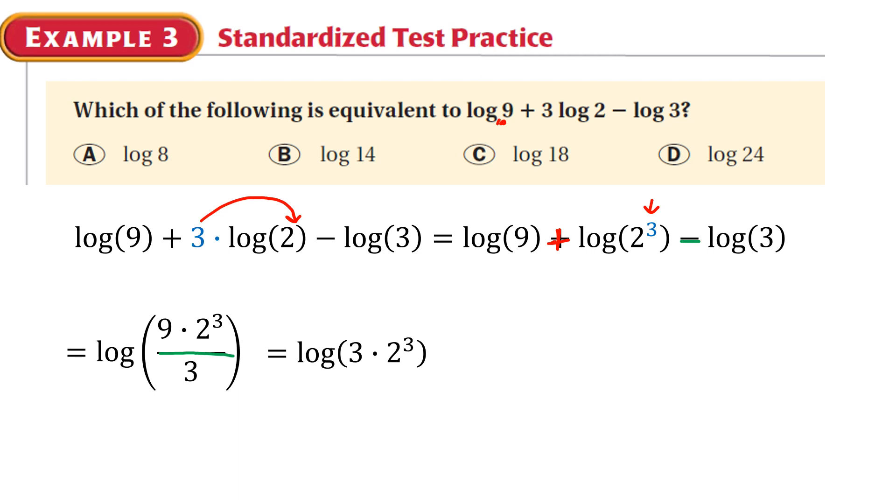I could simplify. Let me show you what I did there. I simplified. 9 over 3 is 3. 3 times 8 gives you log of 24. So the final answer is D. And if you type both into a scientific calculator, I get 1.38 for the original part and for log of 24.